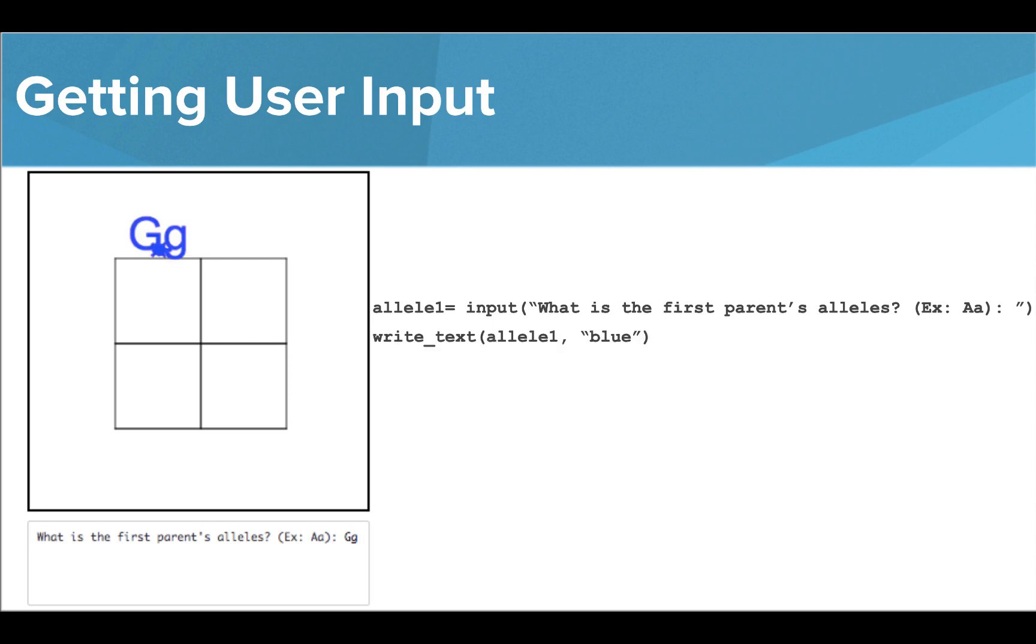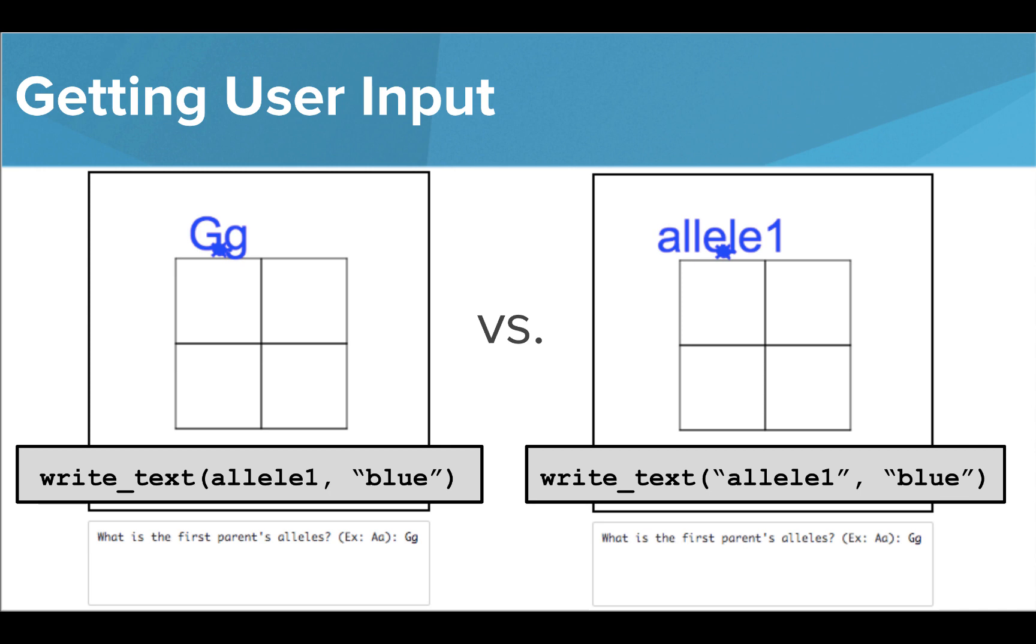Now that we've saved what the user typed as a variable, we can use this as the text to print to the screen by simply plugging the variable name into the write text command where we would normally write the text to print. An important note is that we do not use quotation marks around the variable name, or you'll simply be printing the name of the variable instead of the information that is stored inside it.